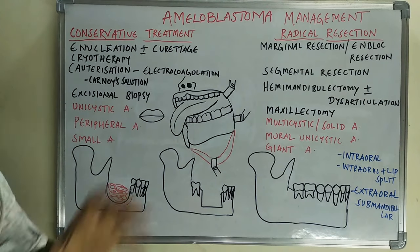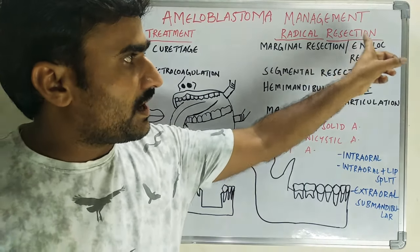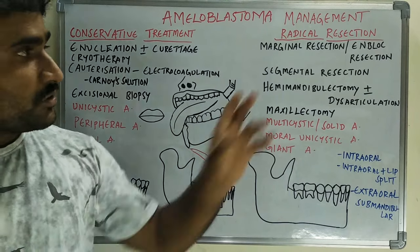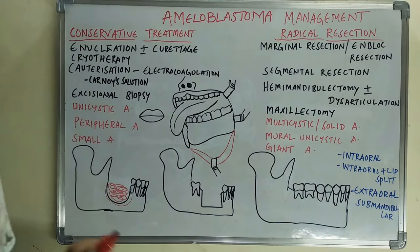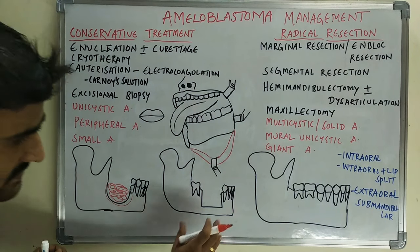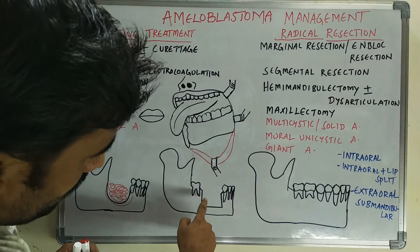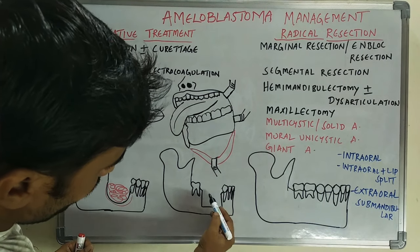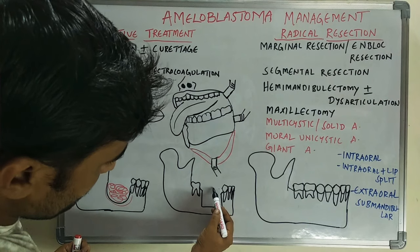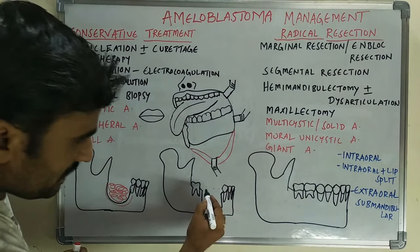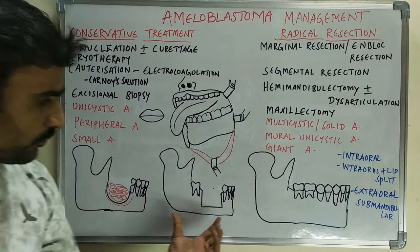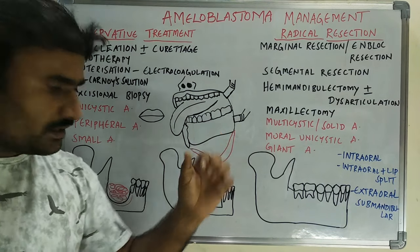Coming to radical resection, we have marginal resection or en-block resection. In marginal resection, we remove the ameloblastoma along with some amount of normal bone. As seen in the diagram, a box-shaped osteotomy is prepared removing the teeth in the involved region — first premolar, second premolar, and first molar area — while preserving the lower border of the mandible.